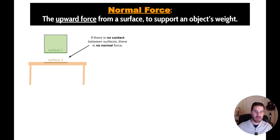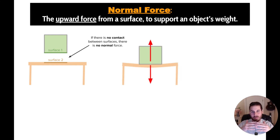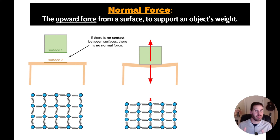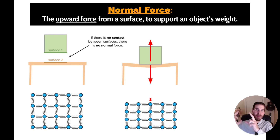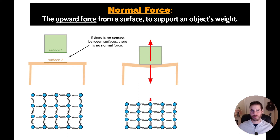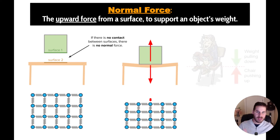What causes a normal force? Normal force is the upward force from a surface which supports an object's weight. When there's no contact between surfaces there's no normal force, but as soon as you place a box onto a table, the table is compressed and that compression causes it to push the box back up. If you imagine the molecules of the table connected by springs — in reality it's intermolecular forces, which is more complicated — when you put a box on the table you're compressing those springs. A compressed spring produces a restoring force when released, and that's essentially what surfaces do. That's where normal force comes from.